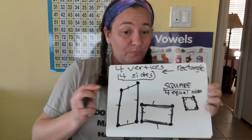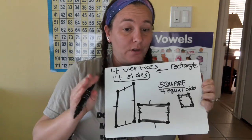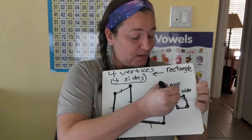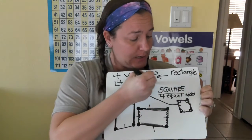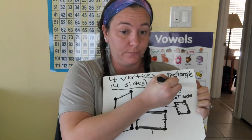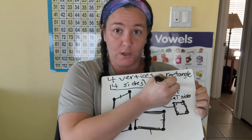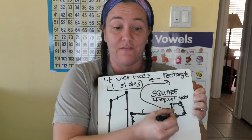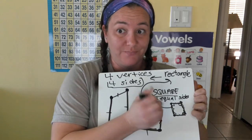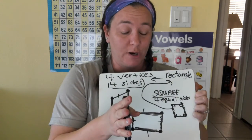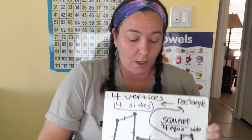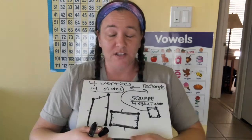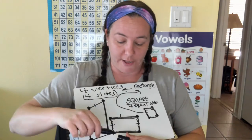So here's the weird thing: a square can technically be a rectangle, but a rectangle can't be a square because it doesn't have equal sides. That was the weird part, but it's okay — if you think about it, it'll click.